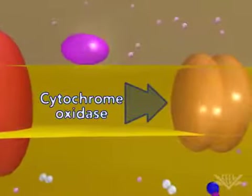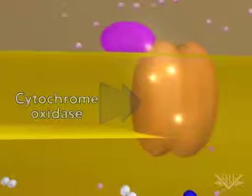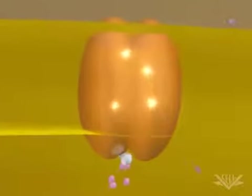The next major step occurs in the cytochrome oxidase complex, which requires four electrons. These four electrons interact with a molecular oxygen molecule and eight hydrogen ions. The four electrons, four of the hydrogen ions, and the molecular oxygen are used to form two water molecules, while the other four hydrogen ions are pumped across the membrane.